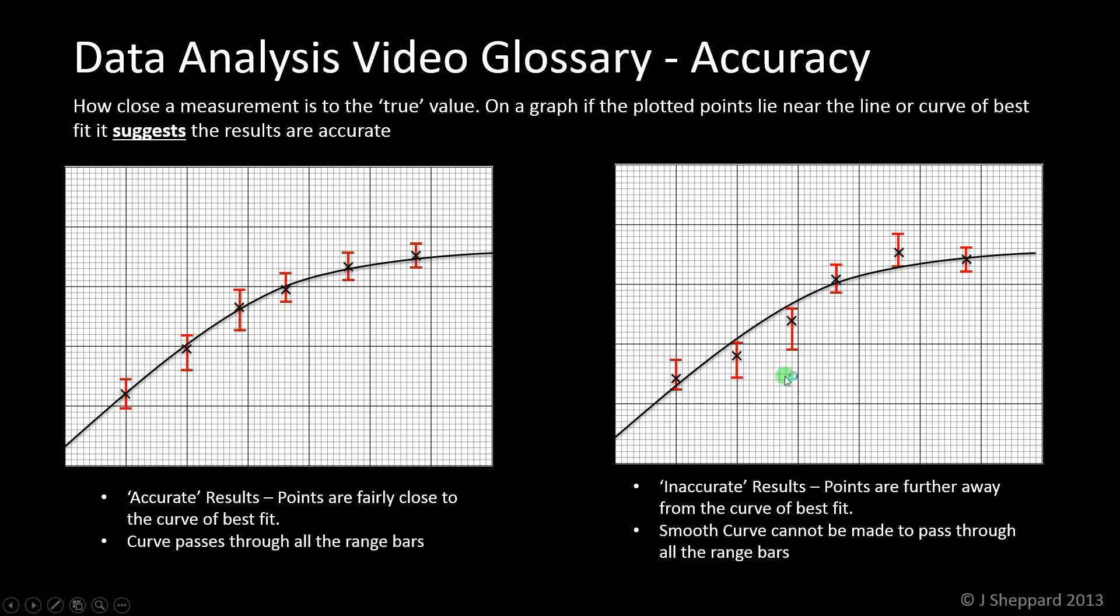If we look at the graph on the right, we see a similar sort of trend. But this time, it's not possible to have a nice smooth curve that goes through all of the range bars. You can see it misses the second range bar and the third one and the fifth one just about skims the bottom of it.